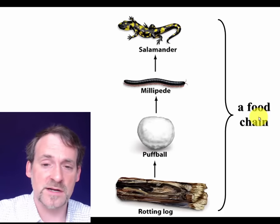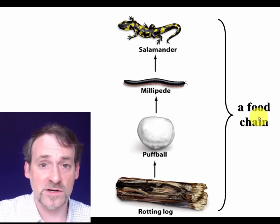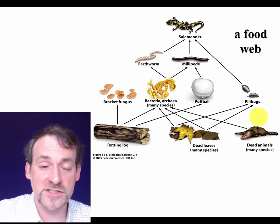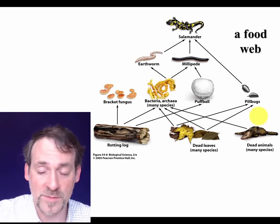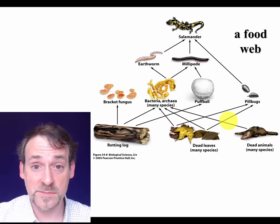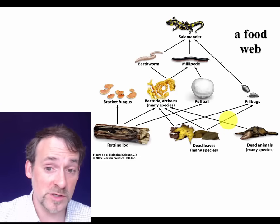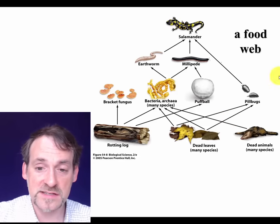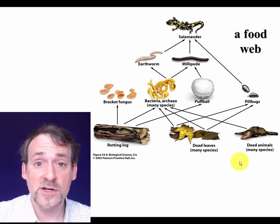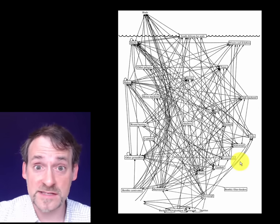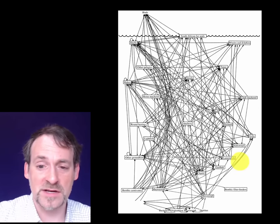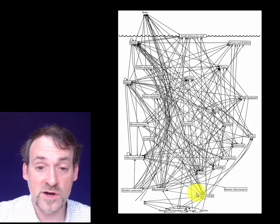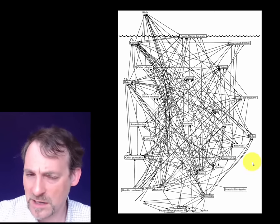The food chains I've been showing you are a grotesque oversimplification of reality. What reality actually looks like is not a food chain but a food web. Almost all organisms are eaten by more than one consumer, and almost all organisms eat more than one food source. This is grossly oversimplified — real food webs look something much more complex, and even that is oversimplified because it leaves out a tremendous number of species found in an offshore ecosystem. Food webs are incredibly complicated.